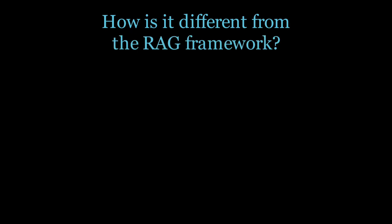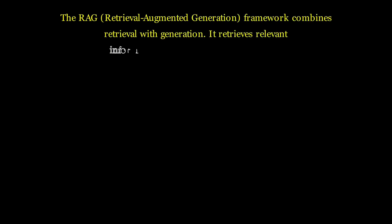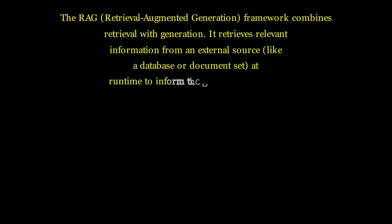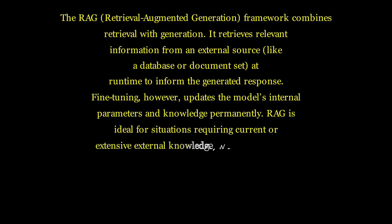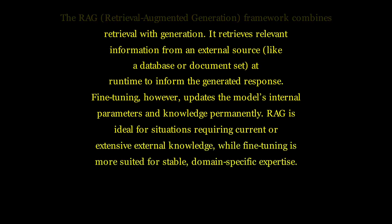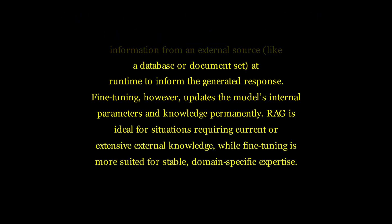How is fine-tuning different from the RAG framework? The RAG (Retrieval-Augmented Generation) framework combines retrieval with generation — it retrieves relevant information from an external source, like a database or document set, at runtime to inform the generated response. Fine-tuning, however, updates the model's internal parameters and knowledge permanently. RAG is ideal for situations requiring current or extensive external knowledge, while fine-tuning is more suited for stable domain-specific expertise.